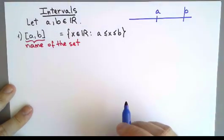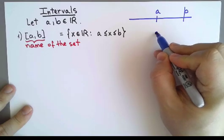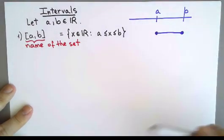Geometrically, if those are the numbers in the real line, this could represent this segment from a to b, and I am including both endpoints.